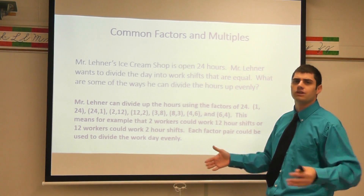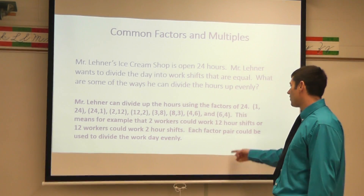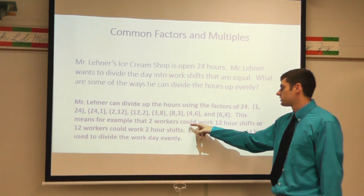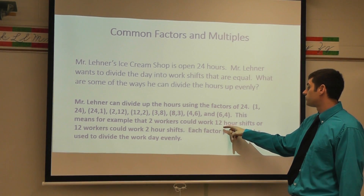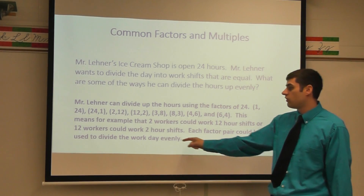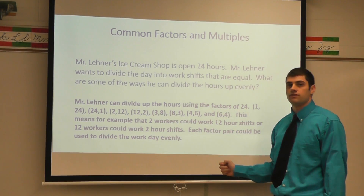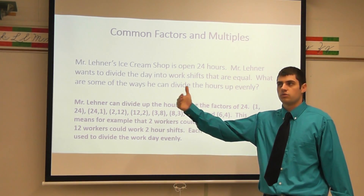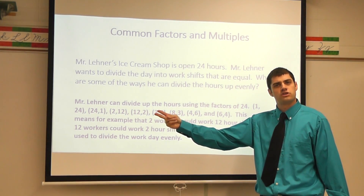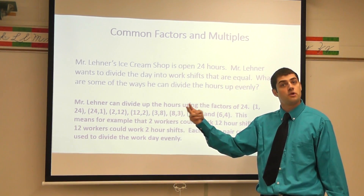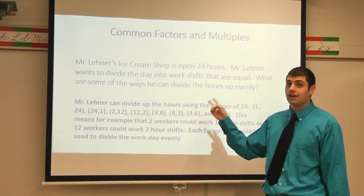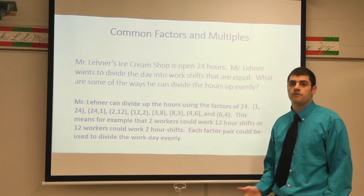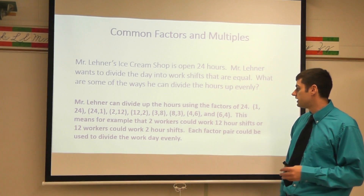You give me the factor pairs of 24 — what do those numbers mean? Well, this means, for example, I can have two workers who each work 12-hour shifts, or 12 workers who each work two-hour shifts. If I have two workers and one works 12 hours and the other works 12 hours, that's two workers working equal shifts that equal 24.